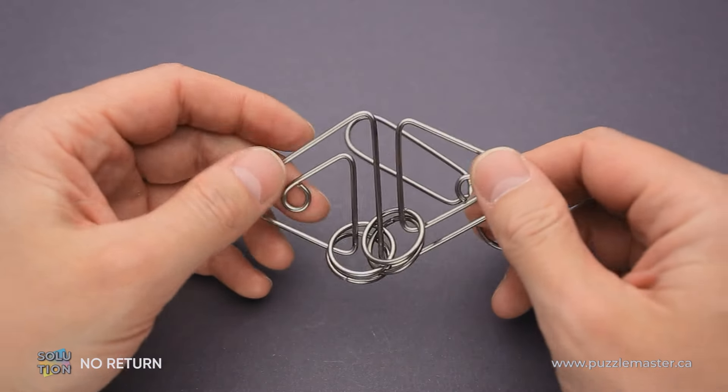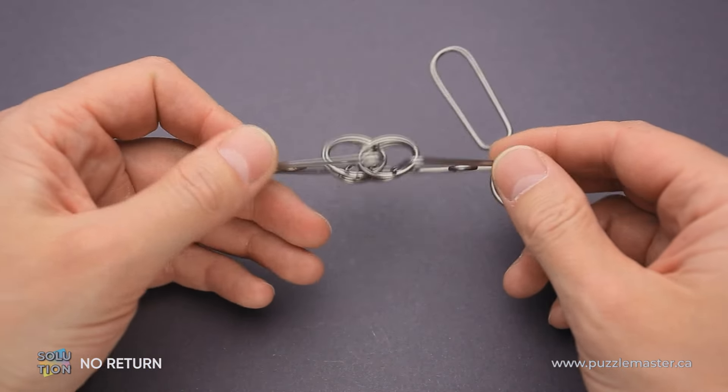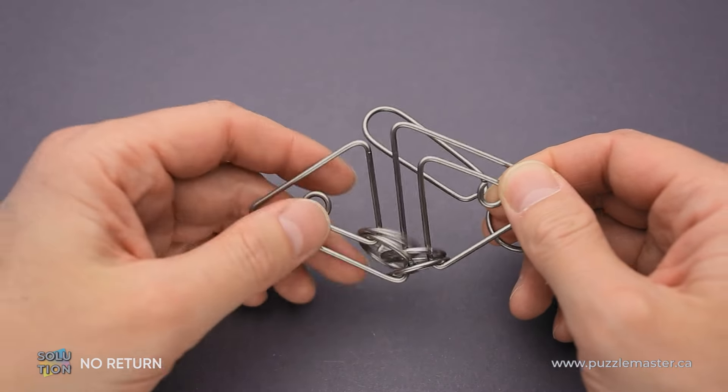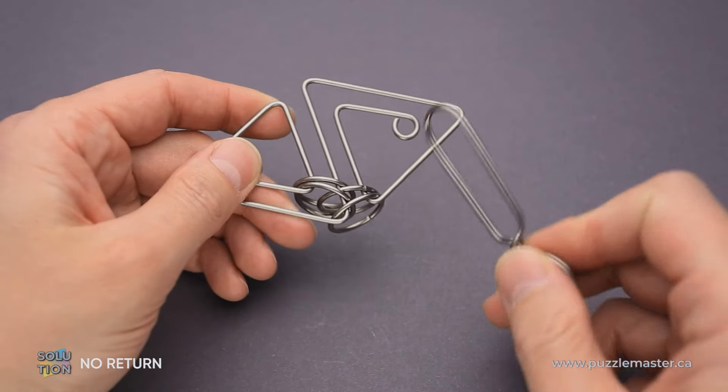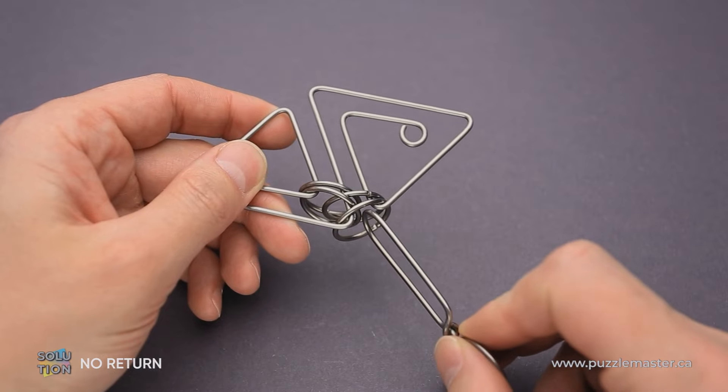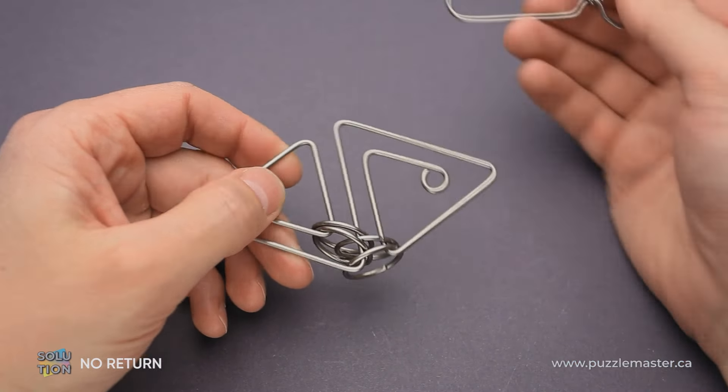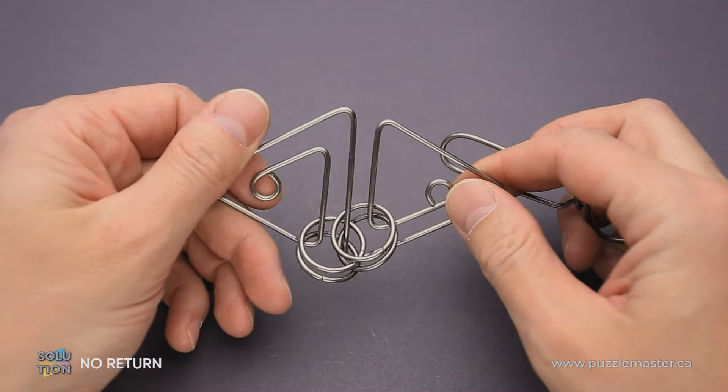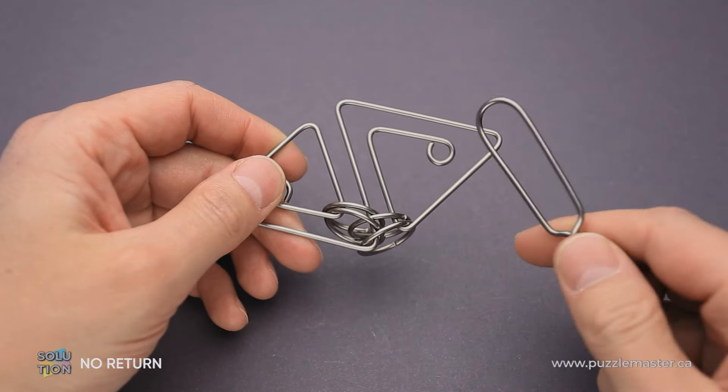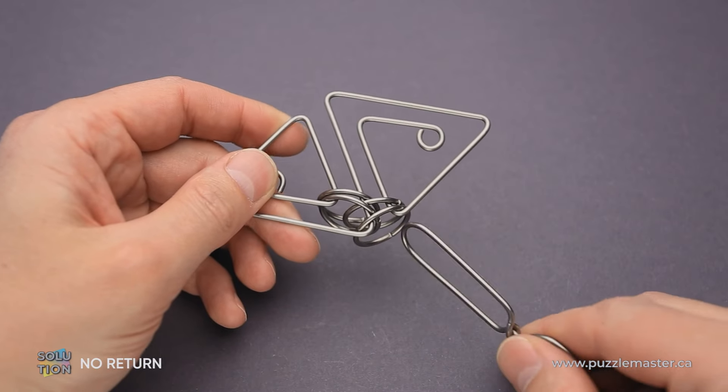The difficulty level of the No Return puzzle is 8 out of 10 on Puzzle Master's difficulty scale that runs from 5 to 10. The goal of the puzzle is to put the handle through this opening in the puzzle and remove it through this opening. So it's kind of a maze that doesn't really look like a maze. And when you solve the puzzle, don't return.